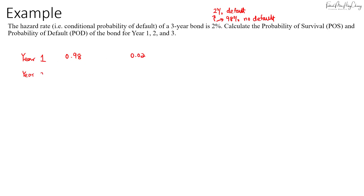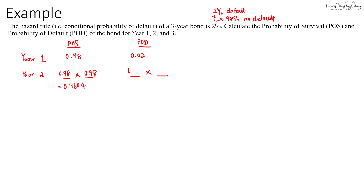In year two, the probability of survival means we have survived both year one and year two. That will be 98% multiplied by 98%, giving us 0.9604. The probability of defaulting in year two means we survived year one and then defaulted in year two, so that's 98% times 2%, which equals 0.0196.